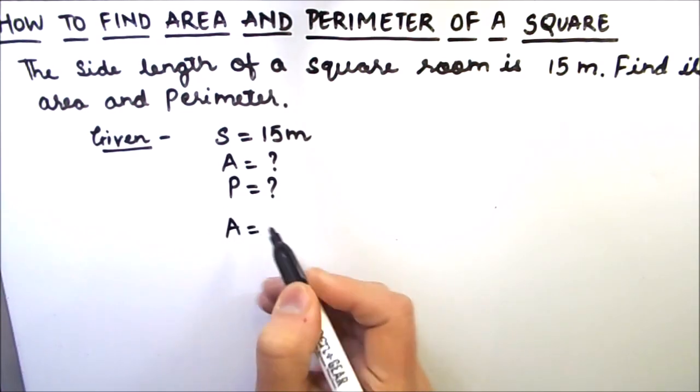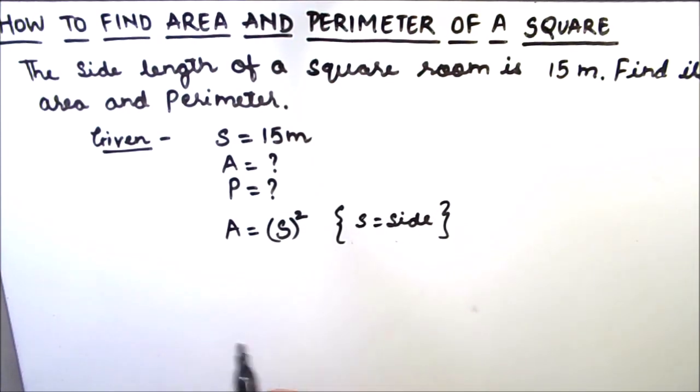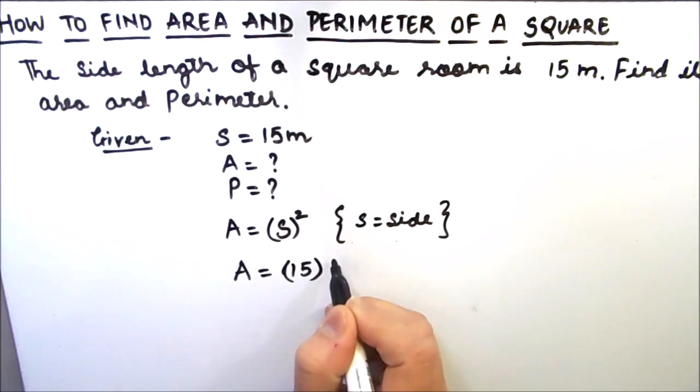we know that the area of square is S square, where S is the side of the square. So let us put the value. So this will be 15 square. So area of the square will be 225 meter square.